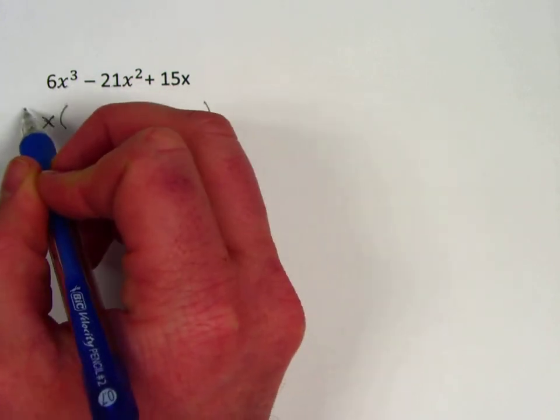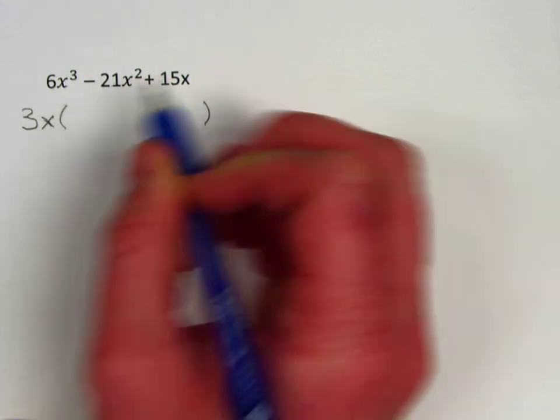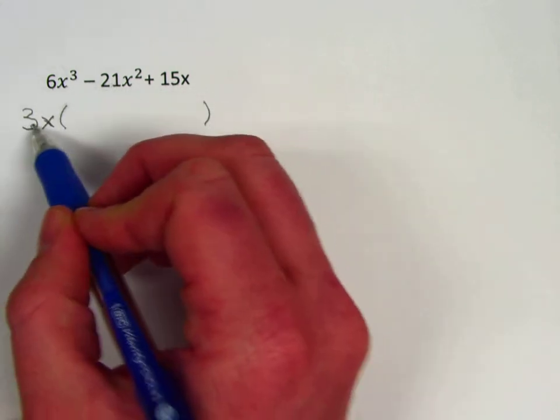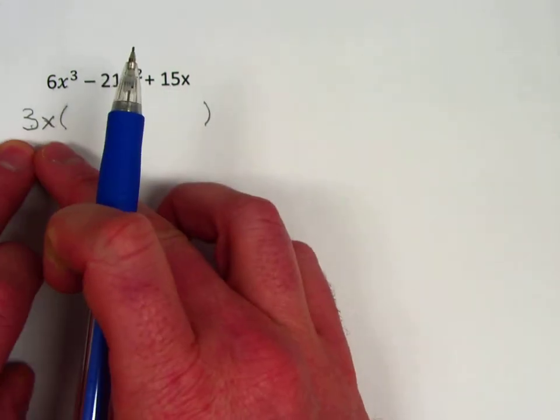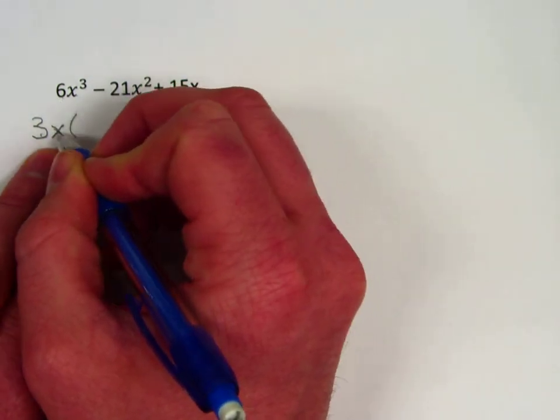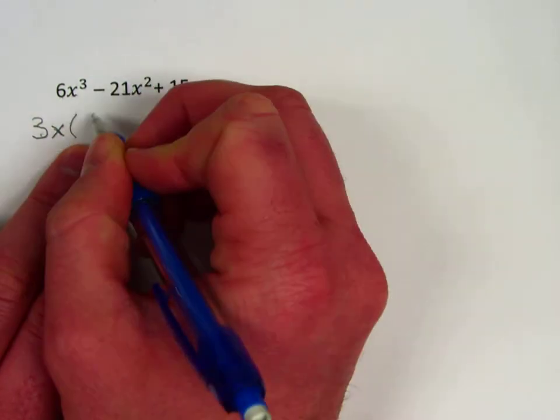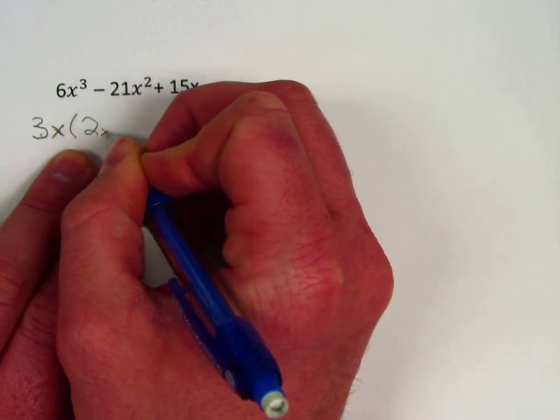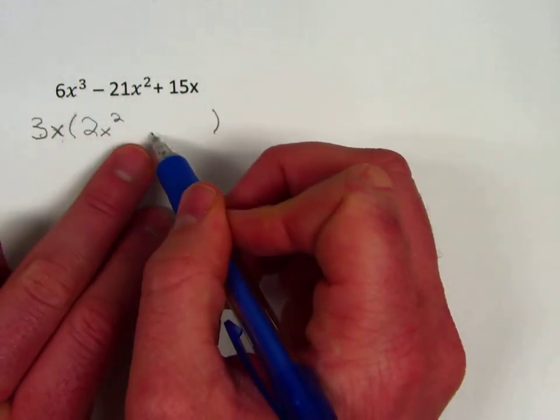Looks like 6 won't be it because 6 doesn't go into those two factors of 6. I think 2 and 3—I think 3 is probably going to be our GCF because 3 is a factor of 21 and 15. So this 3x is our GCF that we factored out to the front.